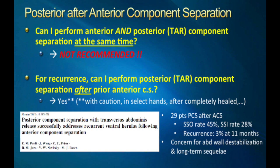What if somebody has a remote history of external oblique release, say several years ago? Can you do a TAR after that? I would answer yes, however with caution and in select hands. They have to be well healed — I'm talking a year or so out from that external oblique release. A great paper written by Eric Pauli, who was at Case Western with Novitsky and Rosen, studied this. It still was very challenging surgery with a significant amount of surgical site occurrence and a reasonable recurrence rate — but that study only went to 11 months. So I would use a lot of caution if you're going to do a TAR after a remote external oblique release.